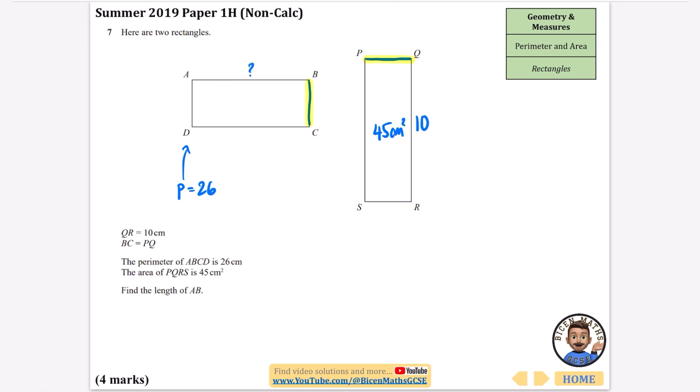First I can find the length of SR straight away because the area is 45 and the side length is 10. If I do 45 divided by 10, I get 4.5. So SR is 4.5, which means PQ is also 4.5. That's 4.5 and that's 10.